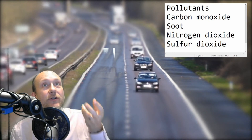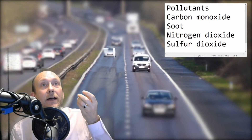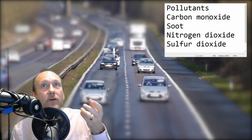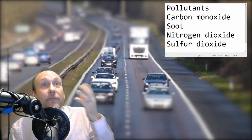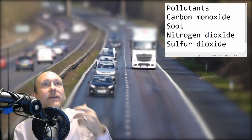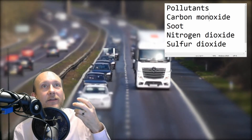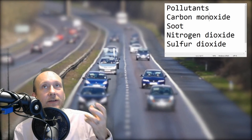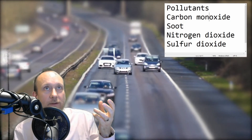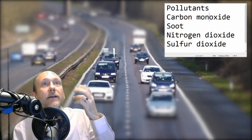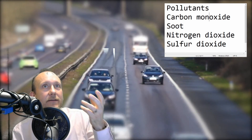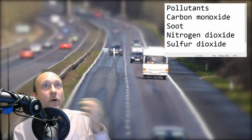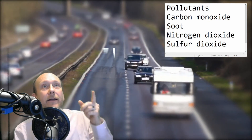The next one creates a nasty acid that contributes to acid rain, and it comes from contamination within the fuels themselves because the living things that formed them contained it. The fourth and final one also contributes to acid rain, and the gas it comes from makes up 80% of the air. It comes from combustion inside hot engines. I hope you've got the right answers in the right order — I'll see you in the next lesson. Bye!